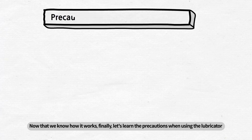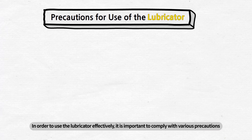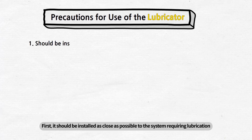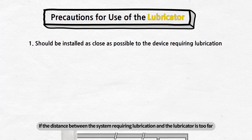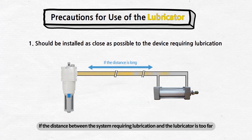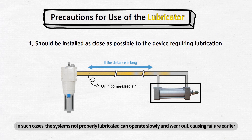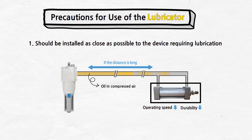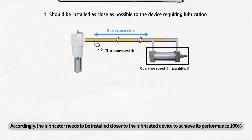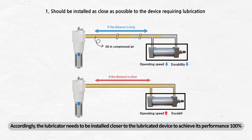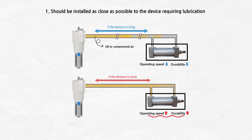Now that we know how it works, let's learn the precautions when using the lubricator. In order to use the lubricator effectively, it is important to comply with various precautions. First, it should be installed as close as possible to the system requiring lubrication. If the distance between the system requiring lubrication and the lubricator is too far, the oil may not reach the system. In such cases, the systems not properly lubricated can operate slowly and wear out, causing failure earlier. Accordingly, the lubricator needs to be installed closer to the lubricated device to achieve its performance 100%.